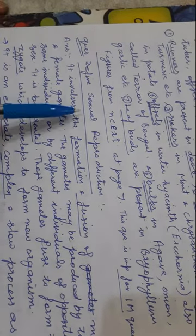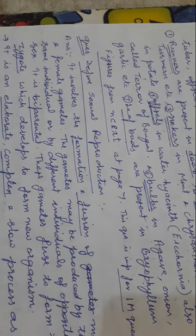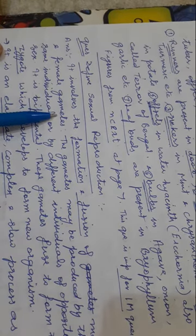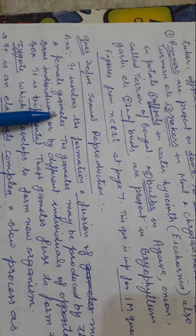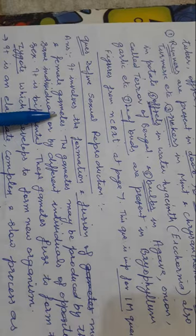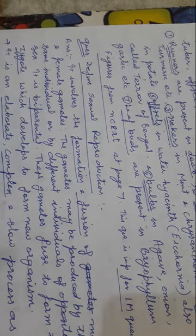First of all, define sexual reproduction. Sexual reproduction is the reproduction in which male and female gametes are formed and fused together. It involves the formation and fusion of male and female gametes. The female produces the egg and similarly the male produces the sperm. When these two structures fuse together they form the zygote. The egg and sperm are called gametes.